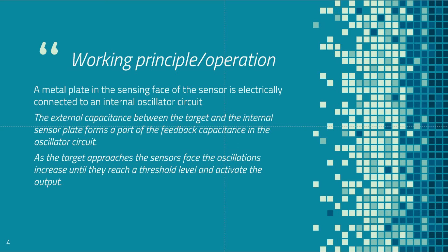What this working principle means is that basically if you take this device and put it close to an object — for example, close to a table or metal surfaces — it detects the signal, and that signal is converted into a frequency. There will be a reading from the capacitance device.